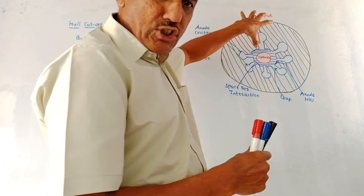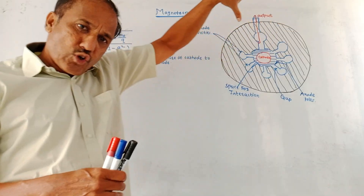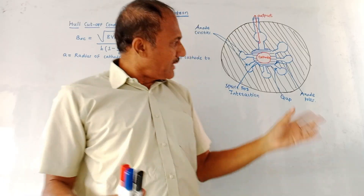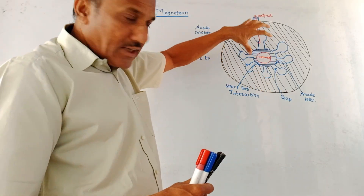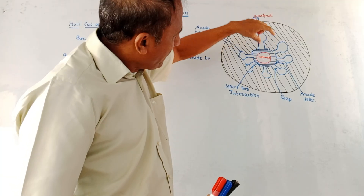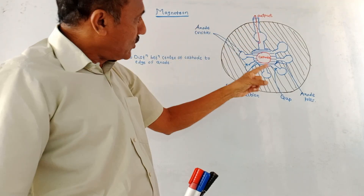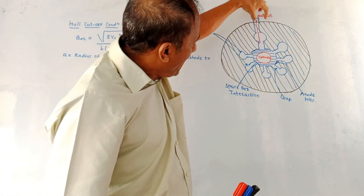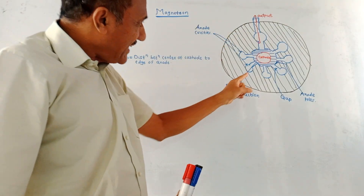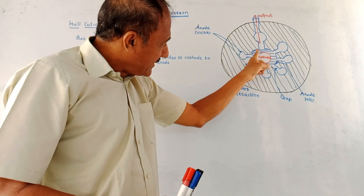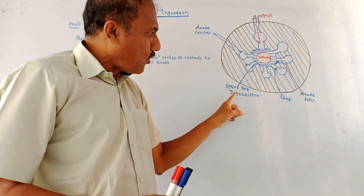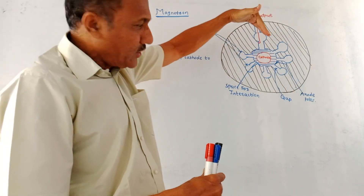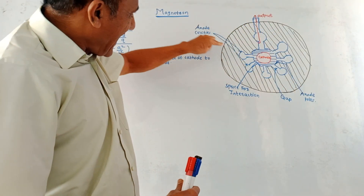This diagram shows the structure of magnetron — this is the cross-sectional view. Magnetron has a cylindrical shape, but this is a cross-sectional view. At the center there is a cathode which emits a number of electrons. It is surrounded by a number of anodes, and output is taken out from one of the anode cavities. Between the cathode and anode there is a space called the interaction space, where the motion of electrons takes place.